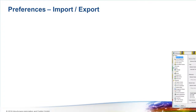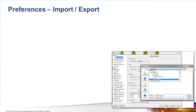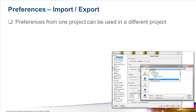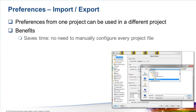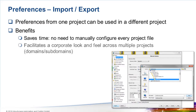Now let's consider the preferences menu. Industrial HiVision is very configurable — it's possible to change so many aspects of how the program looks and behaves. You can install Industrial HiVision and customize it to meet your requirements. However, if you install another copy of Industrial HiVision, you have to start again with the customization.